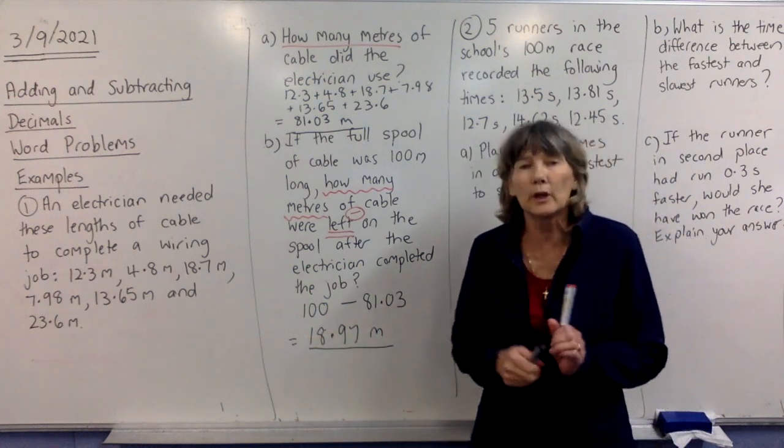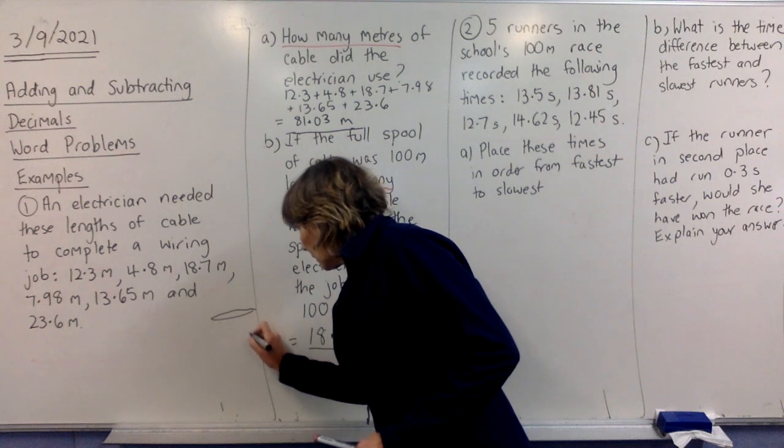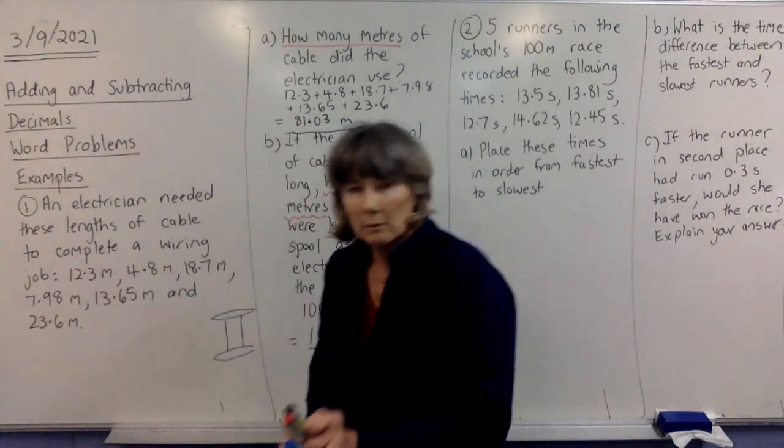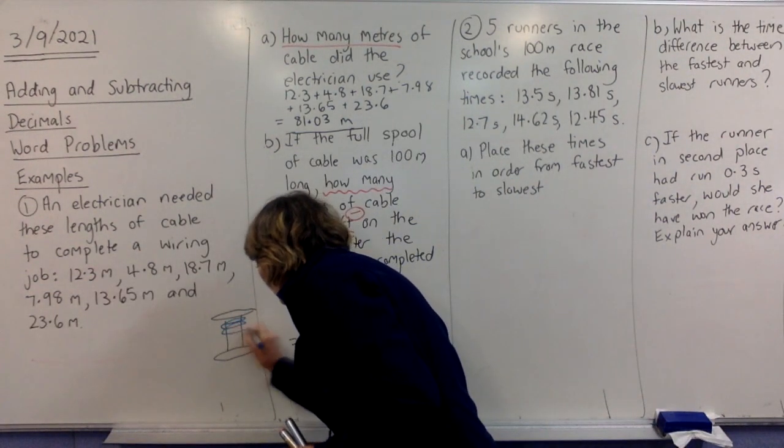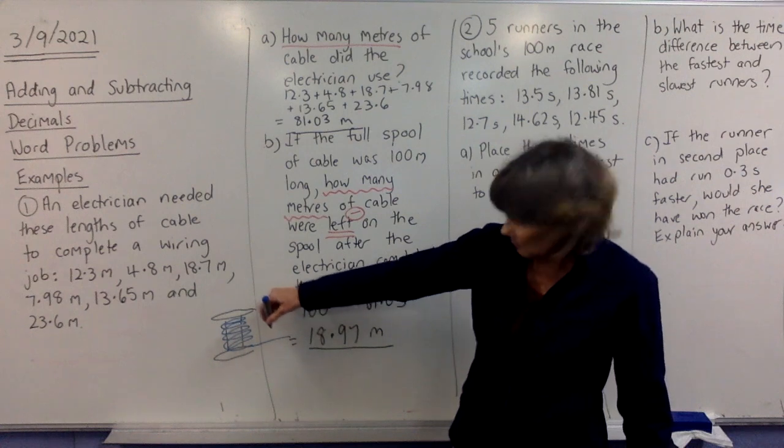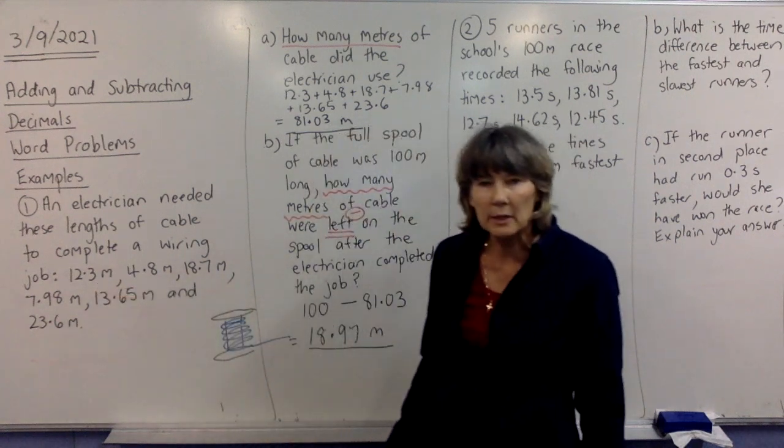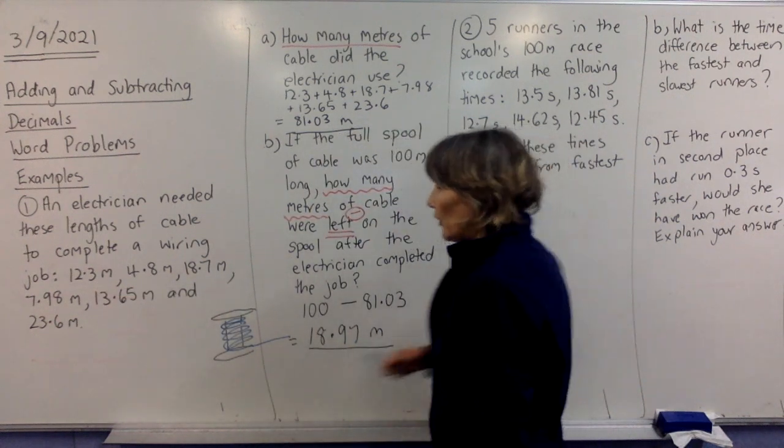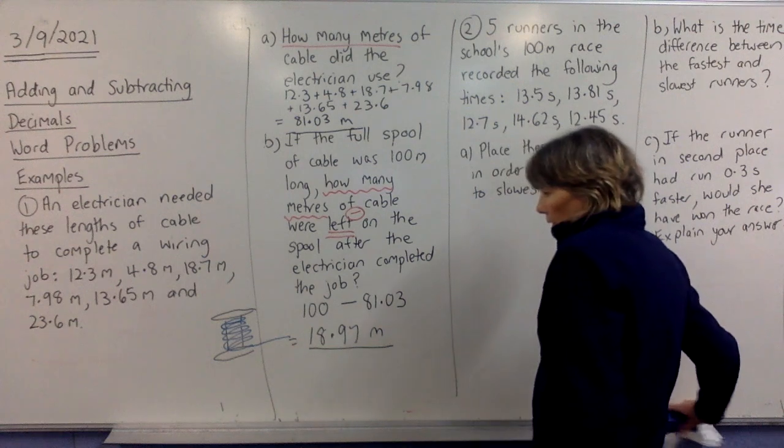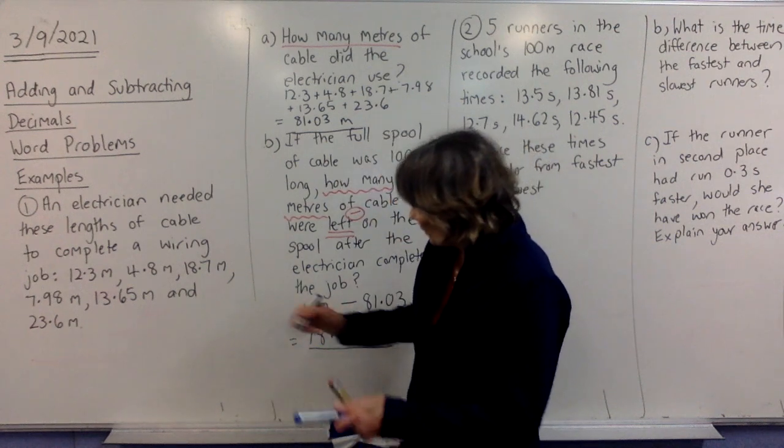Now, what a spool is, just for those of you who are curious, it's one of those things that looks a little bit like this. And we have our wire just spinning around it. So, it's a cylinder really and it's all wound around the cable. So, the electrician turns up, he drags it out, starts pulling it out and he takes out whatever length he wants. So, he can pull it out, cut off 12.3 metres and do the first part of the job. Then you pull it out a bit further, cut off 4.8 metres and do that part of the job. And that's the way it works.